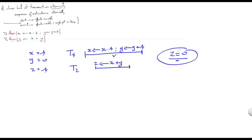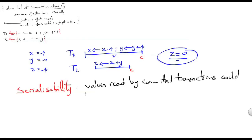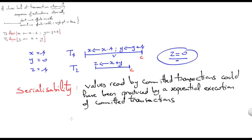More specifically, the concept of serializability means that a value z here read by a committed transaction T2 should be a value that would have been produced by a sequential execution of the transactions. In this case, we have only T1 and T2. So in this case, this means that value z should be a value that could have been produced by a sequential execution of committed transactions.